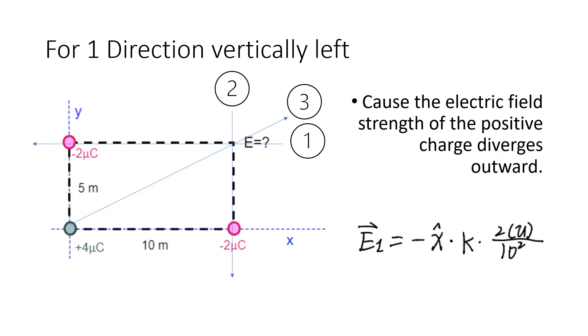For E field one, the direction is pointing vertically left. Why is that? Because the charge is negative, the E field vector will be pointing toward the minus 2 micro coulomb charge.